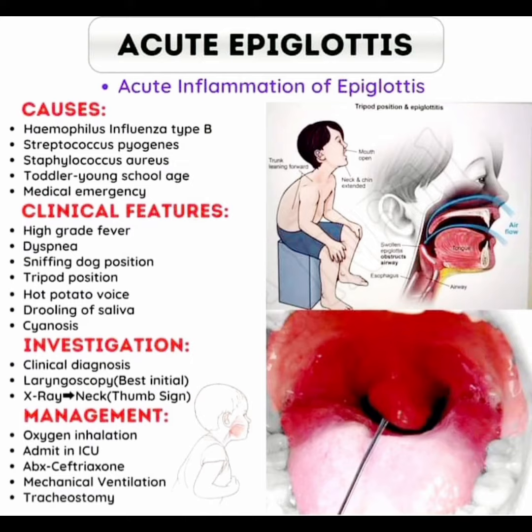Investigation for acute epiglottitis is primarily clinical diagnosis. Laryngoscopy is the best initial investigation. On X-ray of the neck, we find the thumb sign.